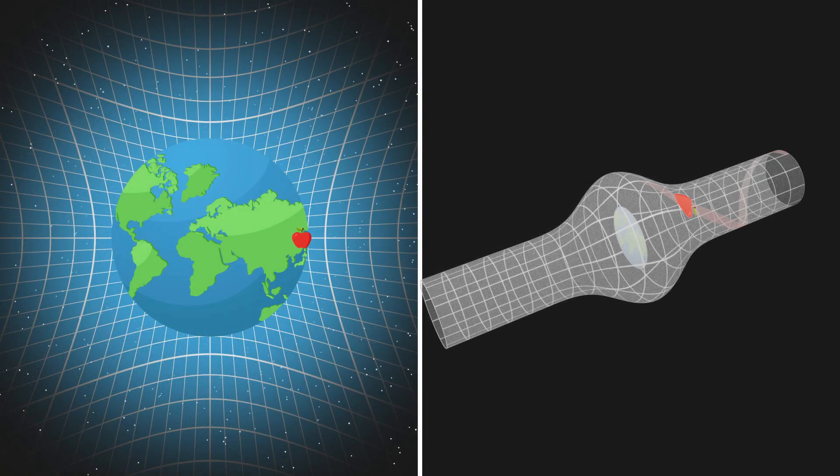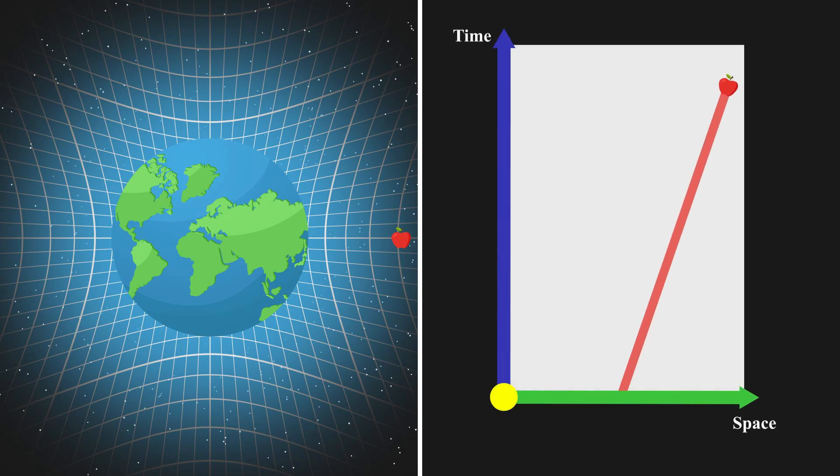If the object is kicked hard enough, it will not only escape the hole, but also rise high enough to reach the cylindrical part of the spacetime surface. Once on the cylindrical section, the object won't fall back. It will continue spiraling indefinitely. In this state, the object has escaped. When unrolled, the spiral path becomes a straight line through two-dimensional spacetime.